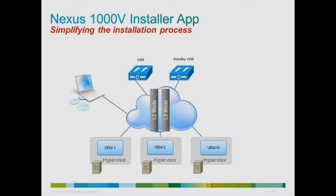thereby enabling high availability deployment right from the installation itself. The app will install Nexus 1000v in layer 3 mode by default but also provides the user with an option of installing it in layer 2 mode. The layer 3 mode allows the user to install Nexus 1000v by simply providing an IP address. Cisco recommends layer 3 mode for new installations of Nexus 1000v.